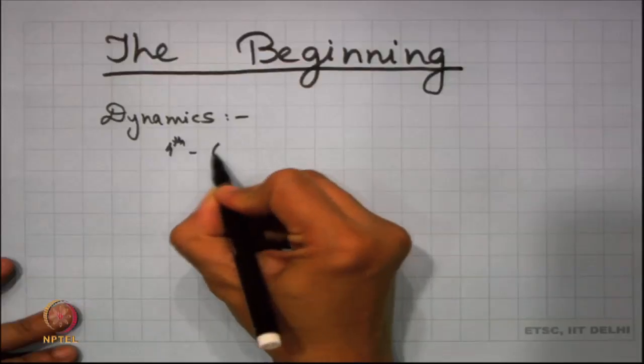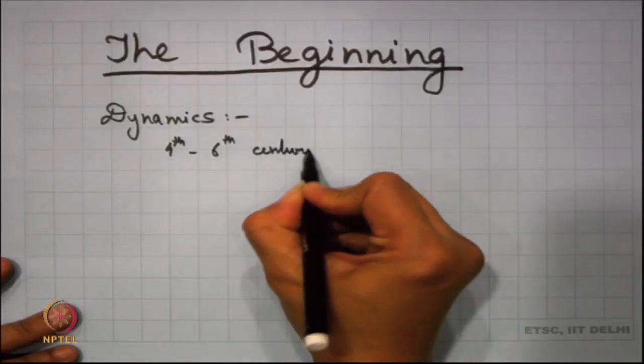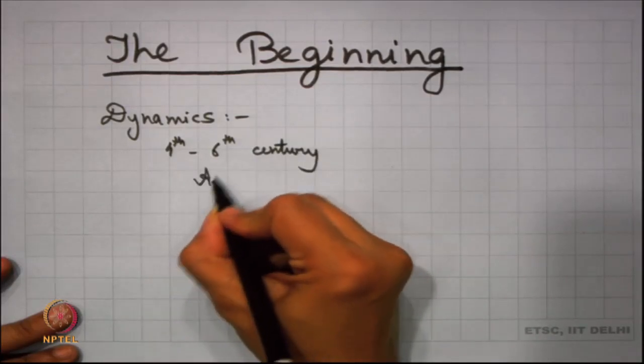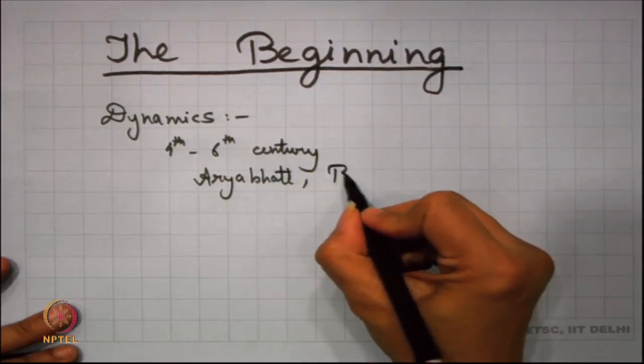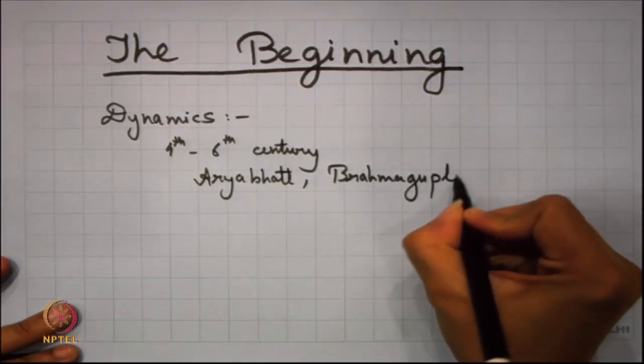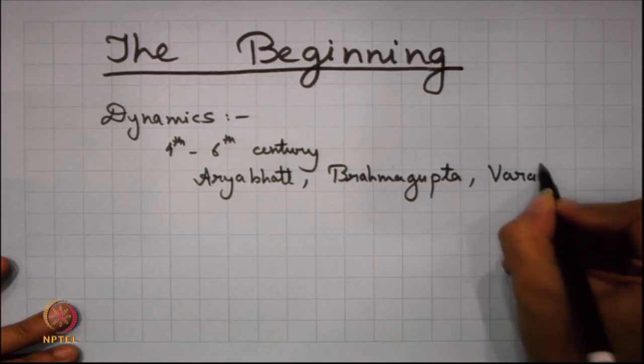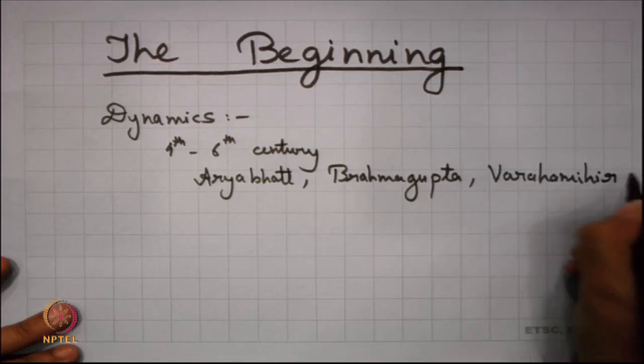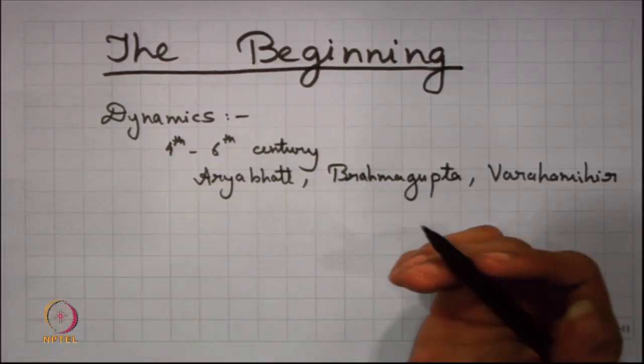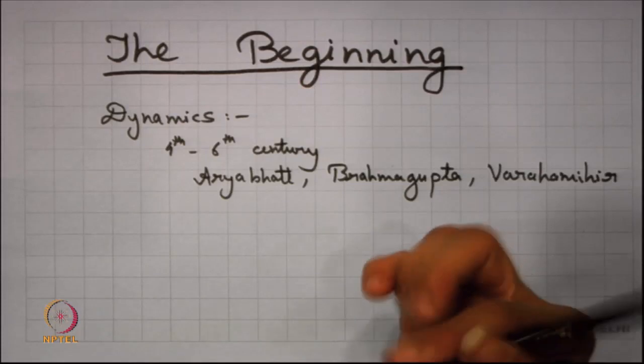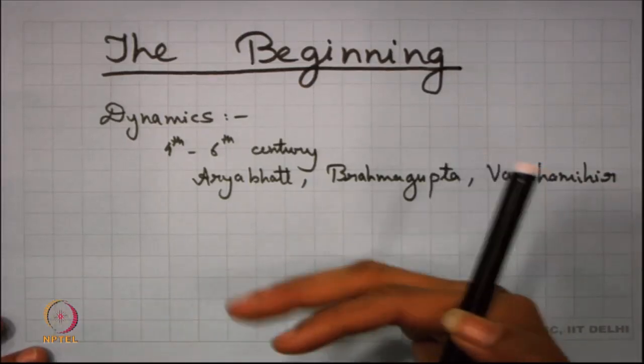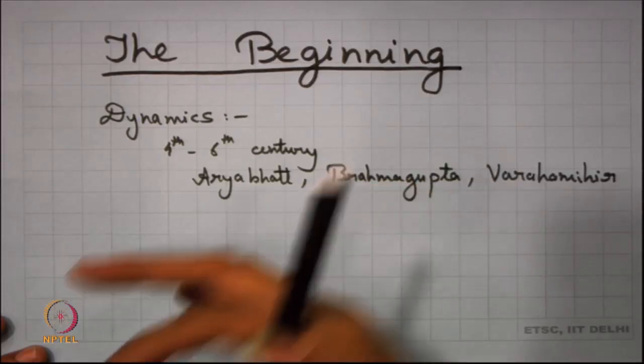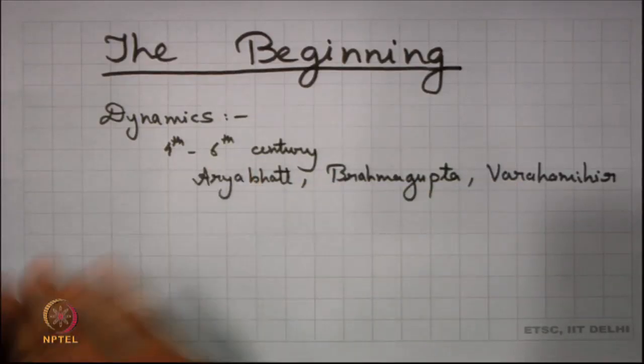Then if we come back to the 4th century, so between the 4th century and the 6th century, we had mathematicians like Aryabhata, Brahmagupta, and Varahamihira who studied the planetary motions. The books written by them can be easily found today. So they did mention about all the planetary motions and we did have the heliocentric approach then. So that was all known at that particular time.